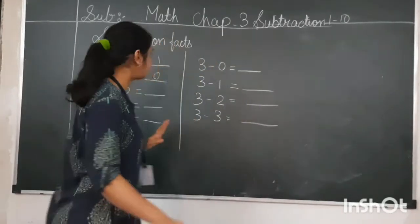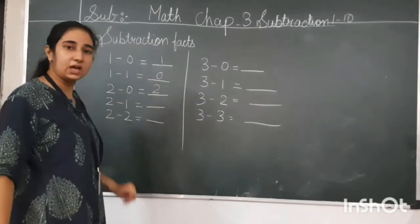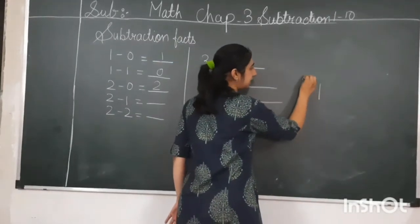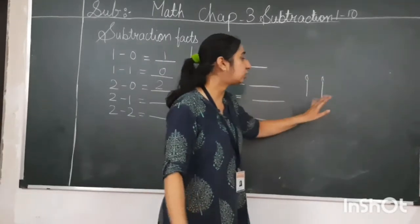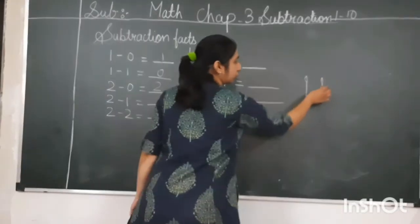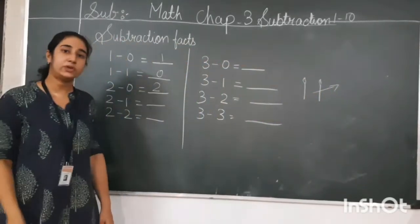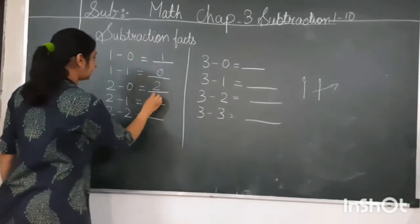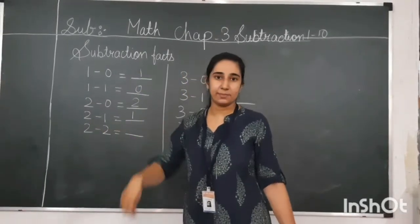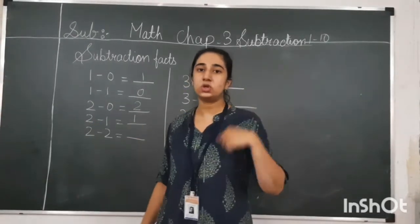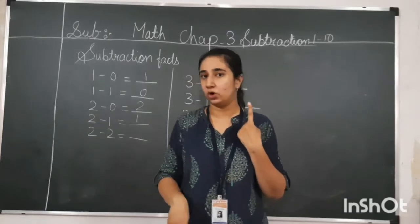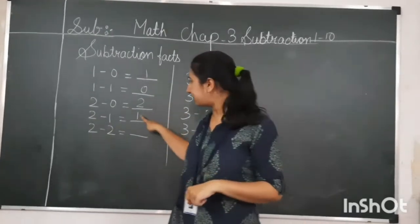You are having two chalks and I am not taking anything from you — but one has been taken from me. So how many are left with you? Only one. So one will be the answer. You can also solve this sum using the finger method: keep the greater number, which is two, in your mind. Show one in your finger. In subtraction we count before, so two before is one. One will be the answer.